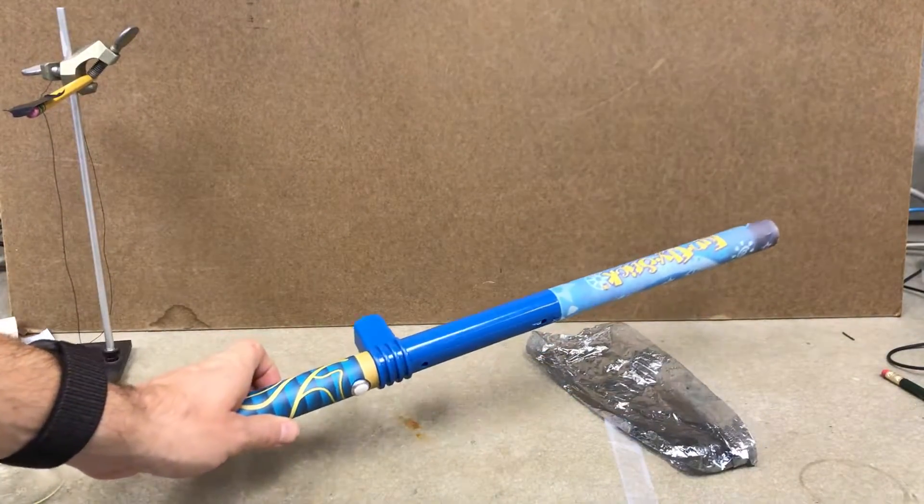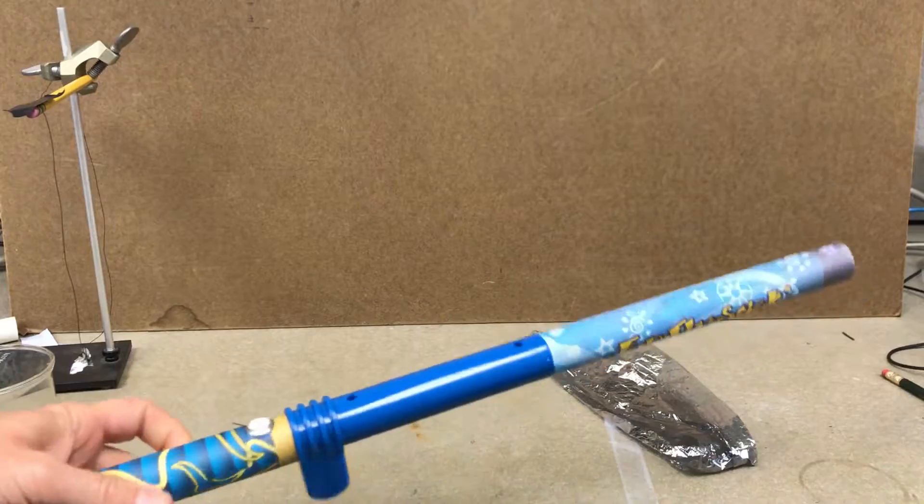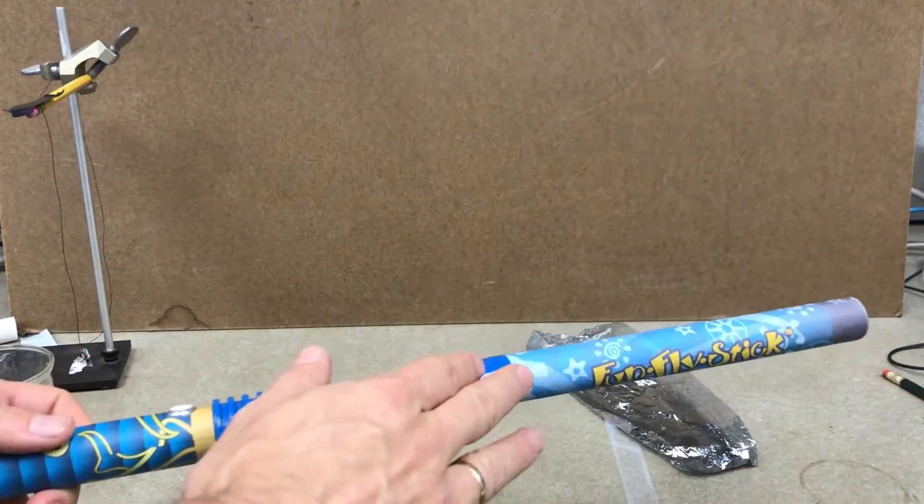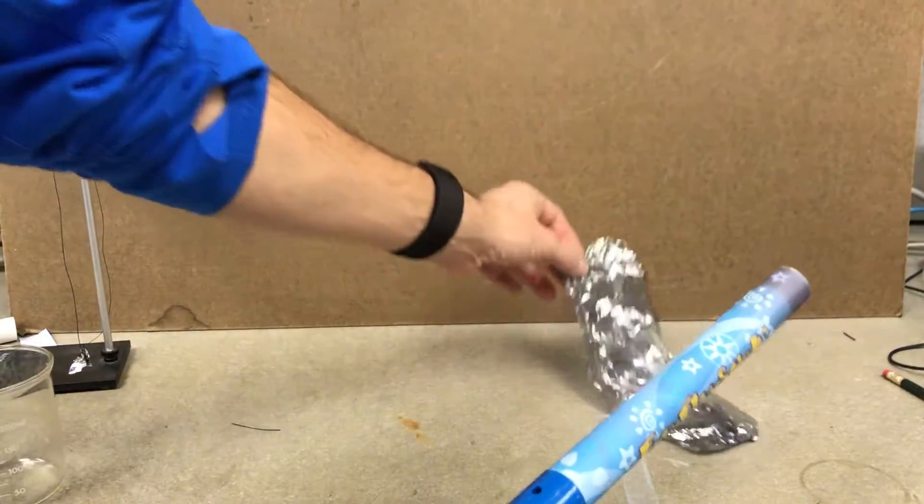Okay, this is the Fun Fly Stick. It's essentially a tiny Van de Graaff generator, so this gets up to a charge and it's used to make this thing fly.